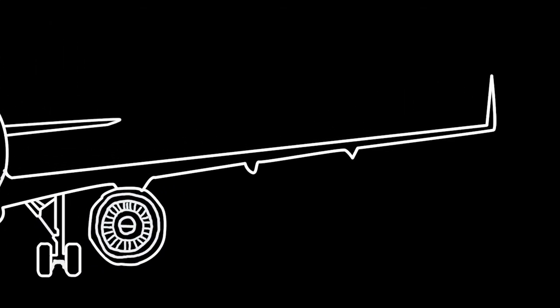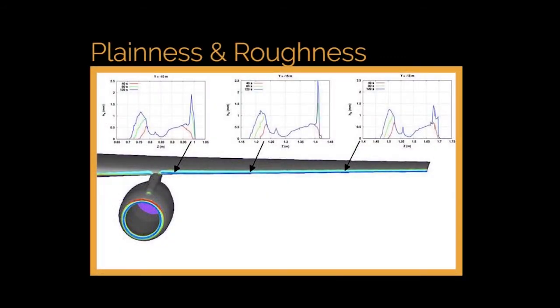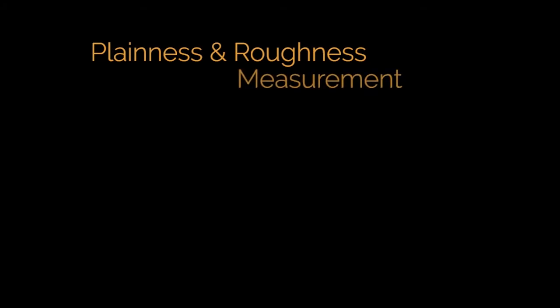Moving on, once the wing is designed with a proper length, a detailed surface profiling is done which checks the plainness of the wing surface. Any deviation from the standard values can cause a momentum loss during the flight. This image here shows a plainness and roughness profile of a plane wing. So we will learn about the plainness and roughness measurements.